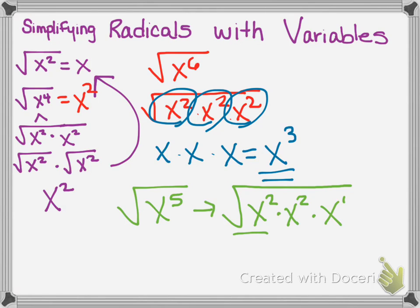So now we can simplify and pull out x squared two times. So that means I have x to the second, and since I couldn't take this x out, that's left over. So I have x underneath the radical.